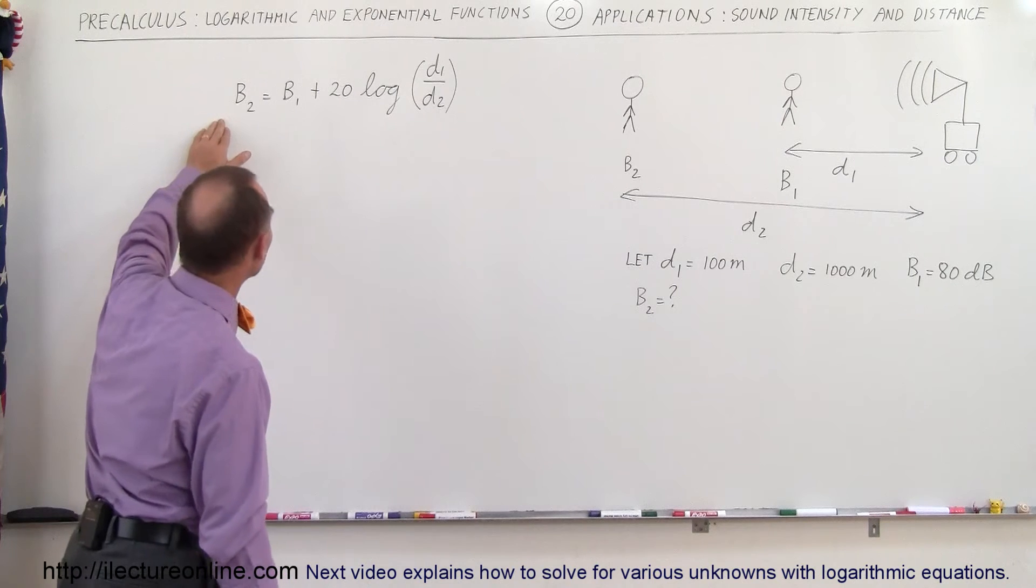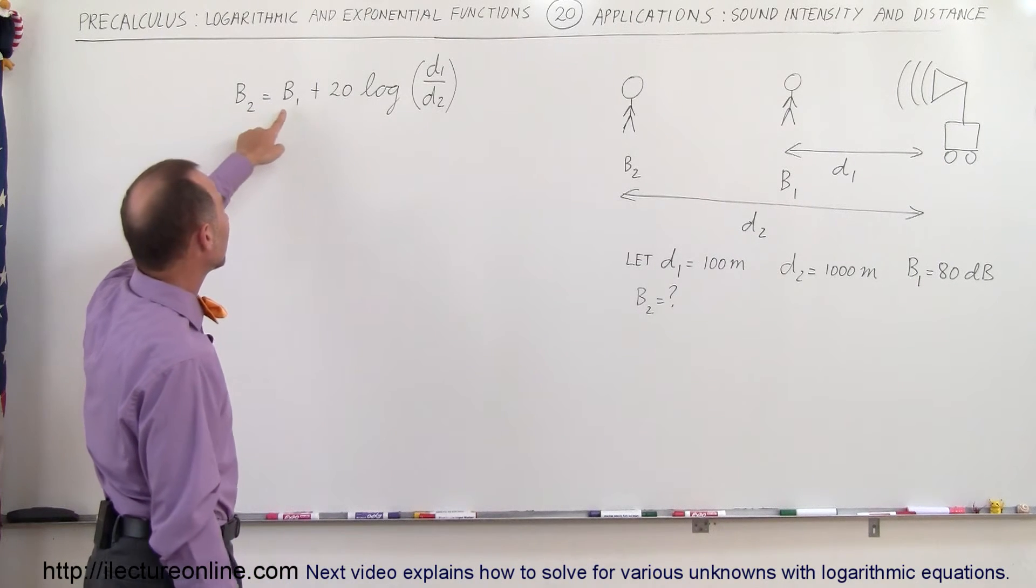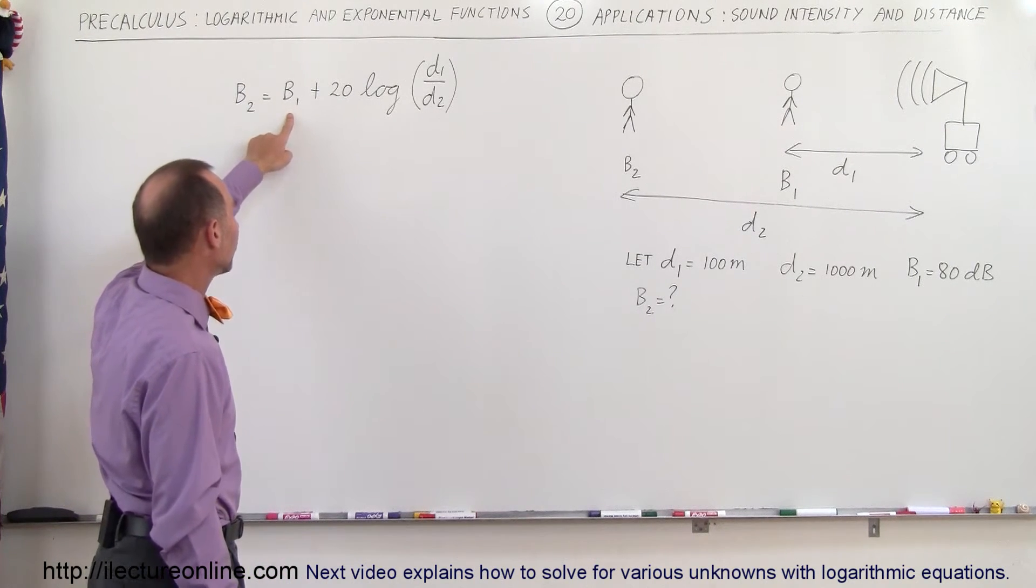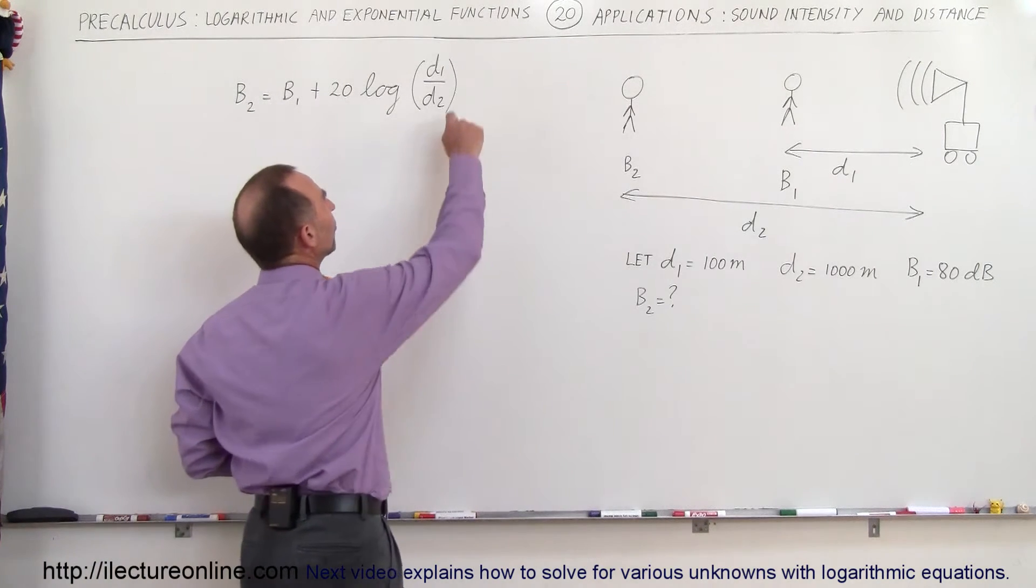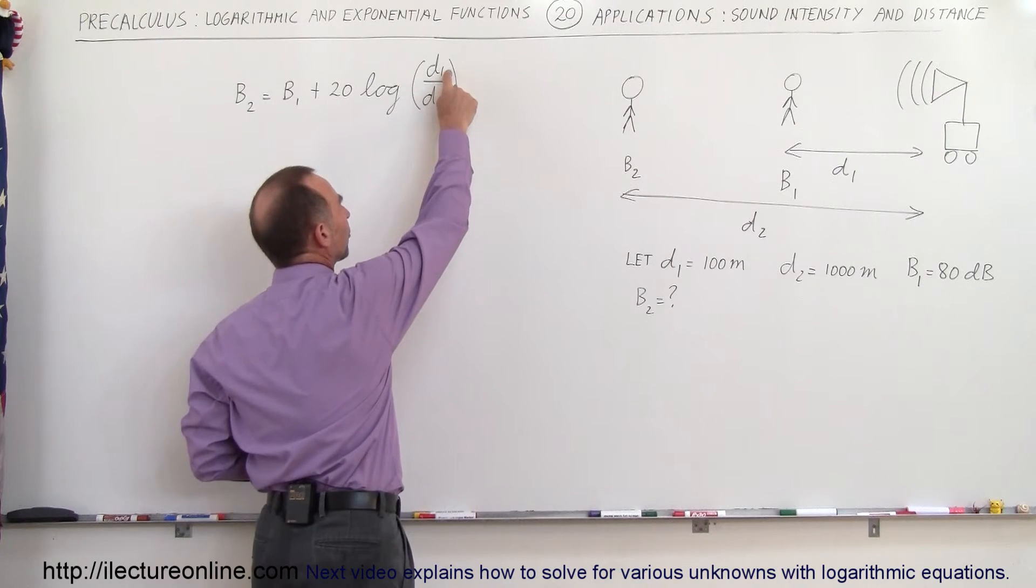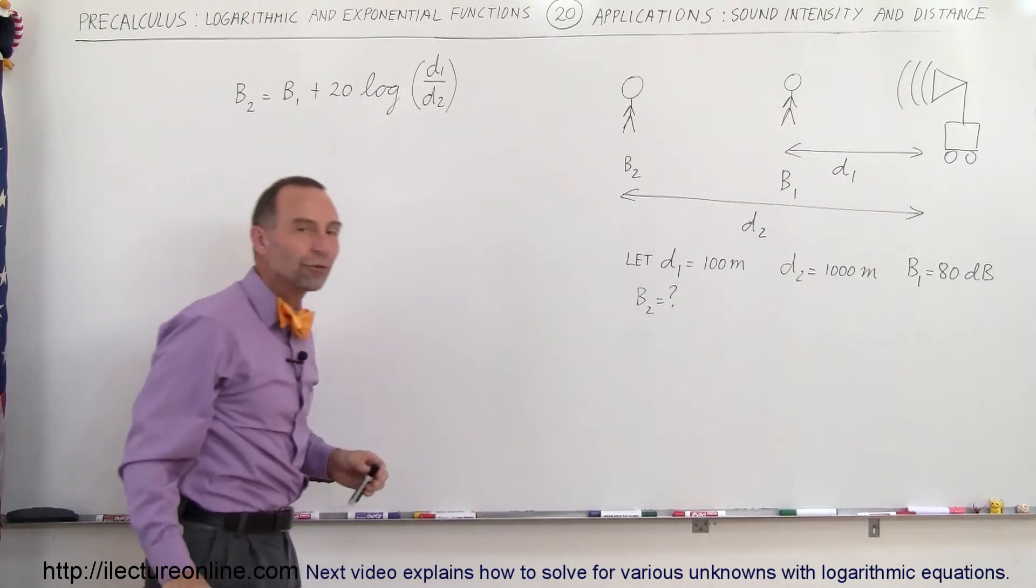And here's the equation. The sound intensity for the second person is equal to the sound intensity for the first person plus 20 times the log of the ratio of the distance from the source for the first person divided by the distance from the source for the second person.